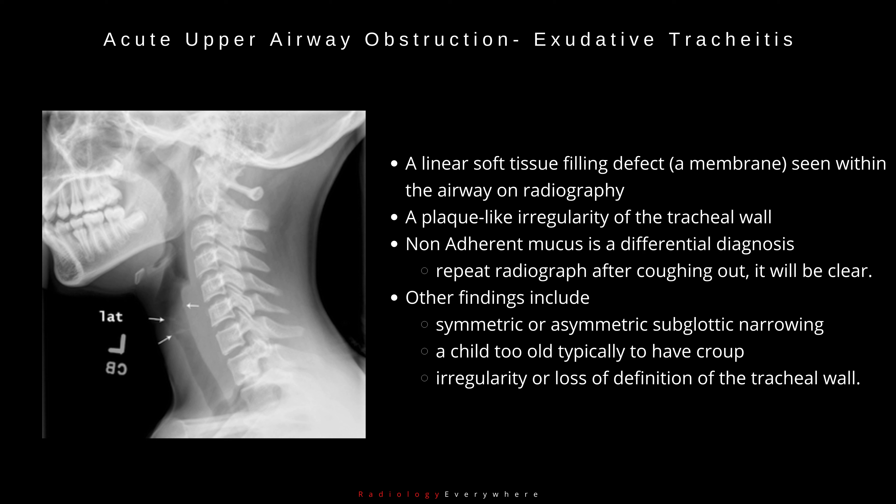A linear soft tissue filling defect — a membrane — seen within the airway on radiography is the most characteristic finding. A plaque-like irregularity of the tracheal wall is also highly suspicious. Non-adherent mucus is a differential diagnosis, but a repeat radiograph after coughing it out will be clear. Other findings include symmetric or asymmetric subglottic narrowing in a child too old to have croup, and irregularity or loss of definition of the tracheal wall.